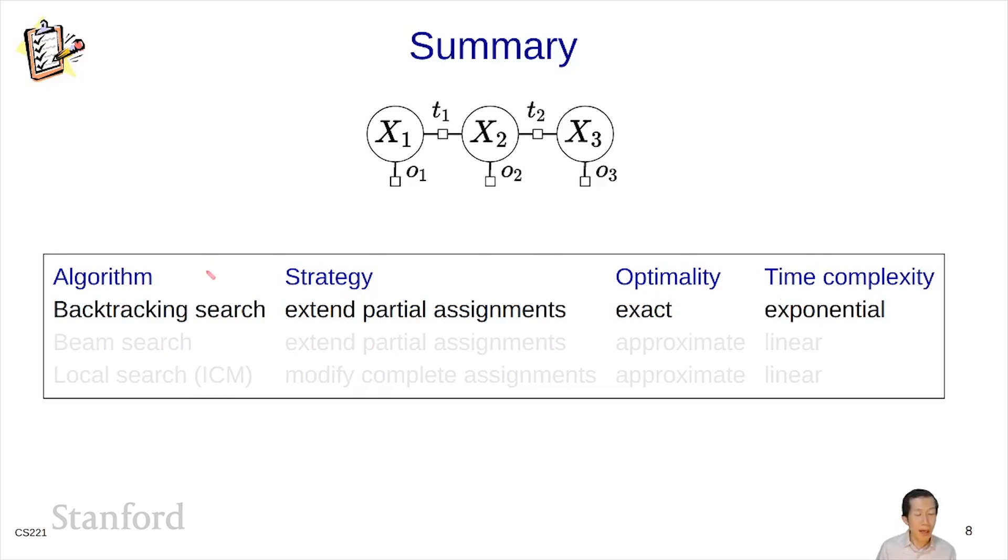Then we looked at beam search, which also extends partial assignments. And here, we're trading off accuracy for time. So this is approximate. It will only give you an okay solution. But it's linear in the number of variables.